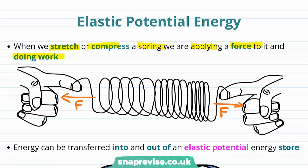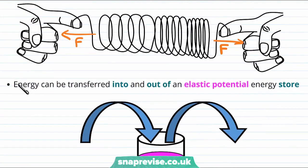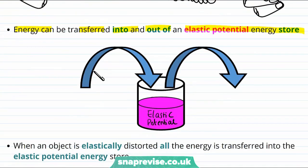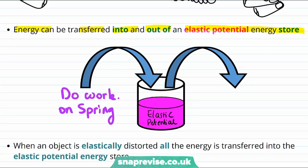So where is all of this energy going? Well, energy can be transferred into and out of the elastic potential energy store. The arrow showing energy going into the elastic potential energy store shows what happens when we do work on the spring. If we let go of the spring, it will return to its natural length and the elastic potential energy will leave and energy will be lost from the elastic potential energy store.